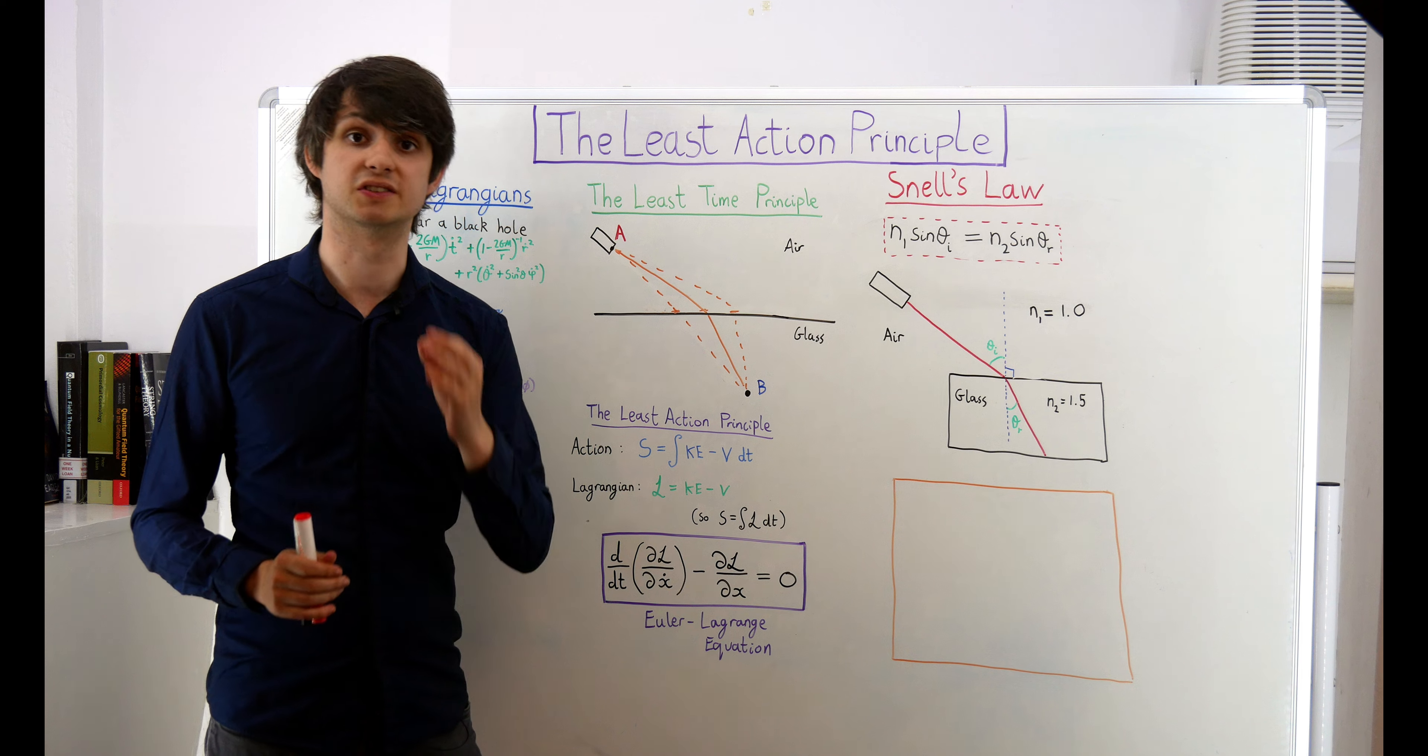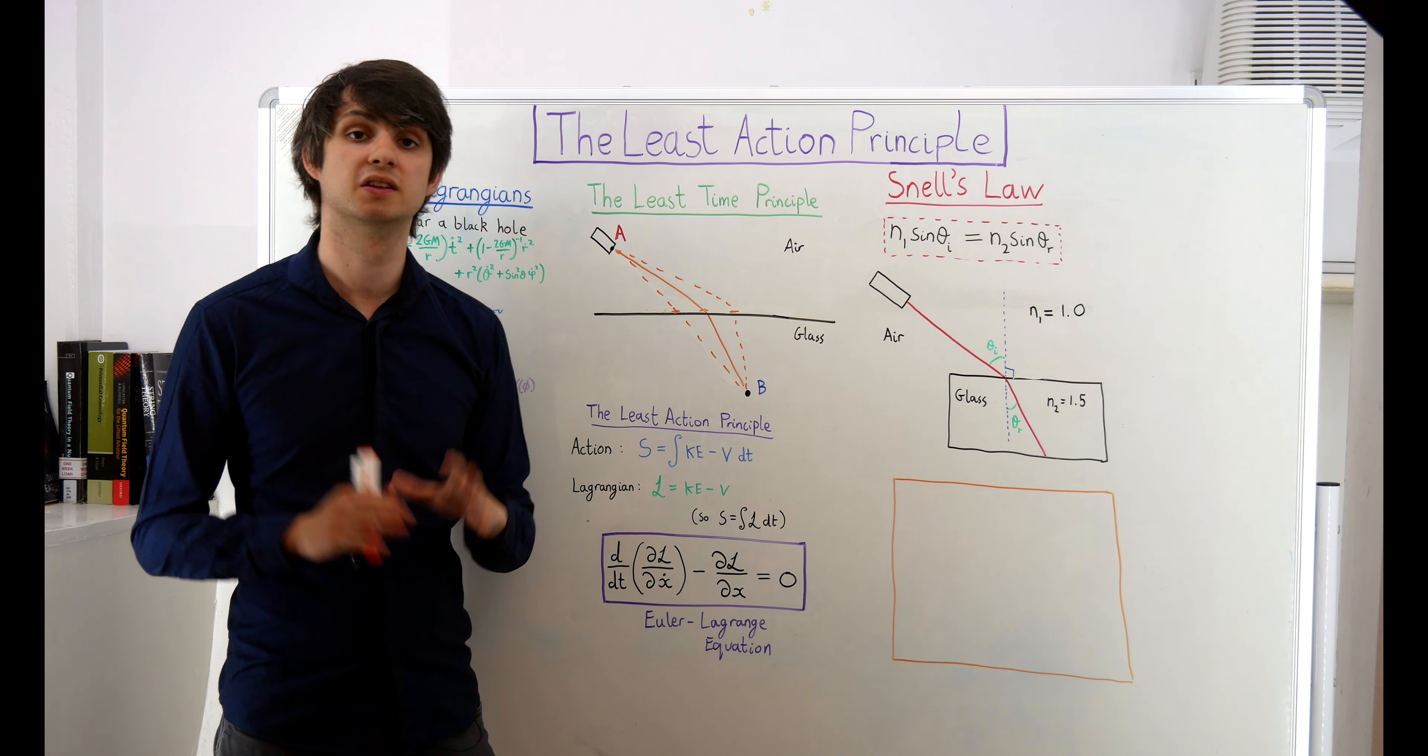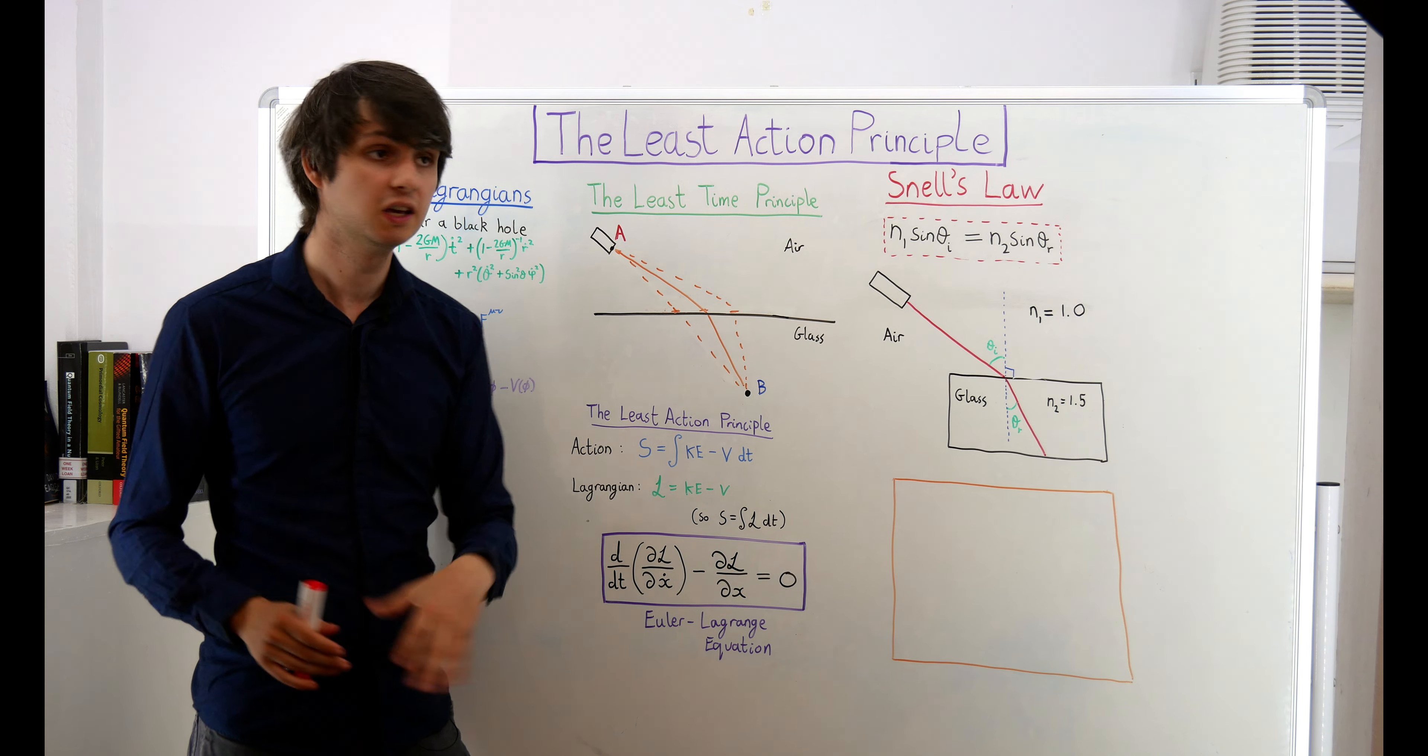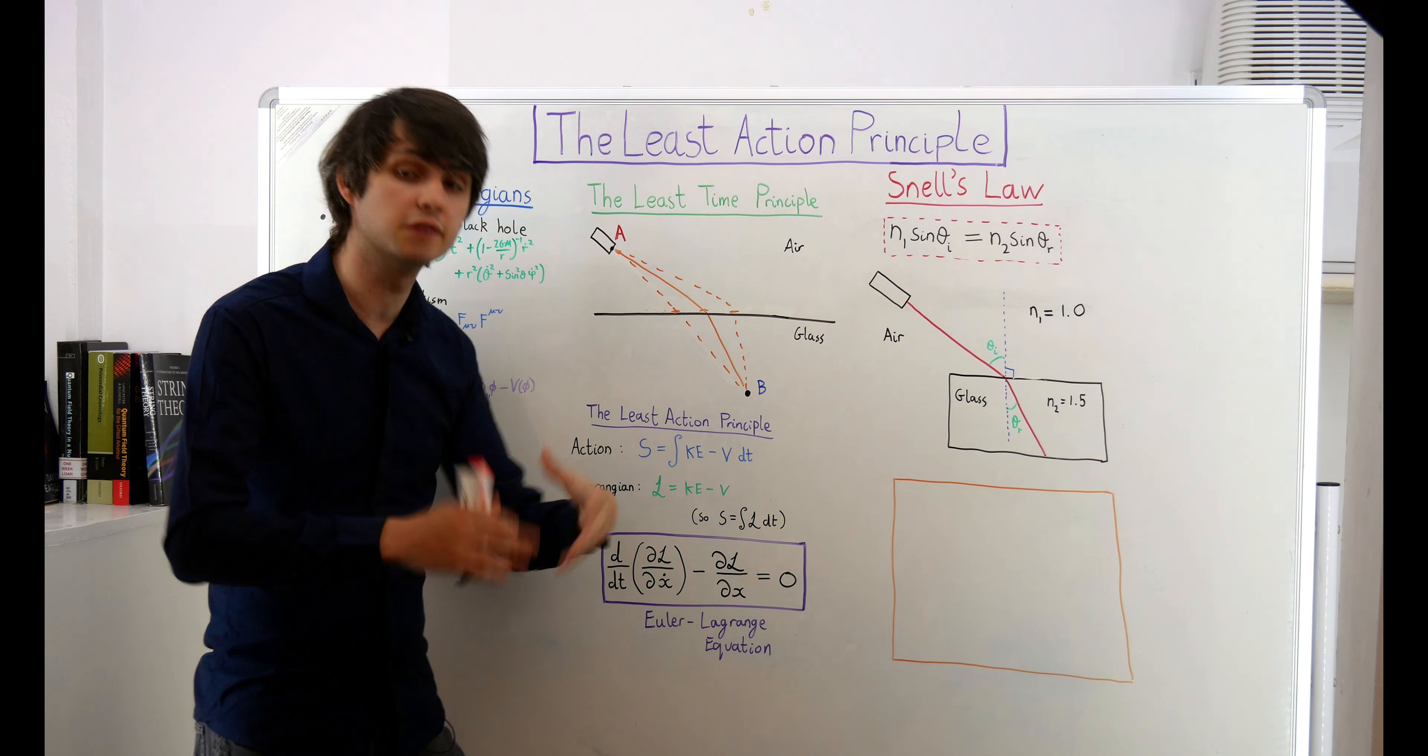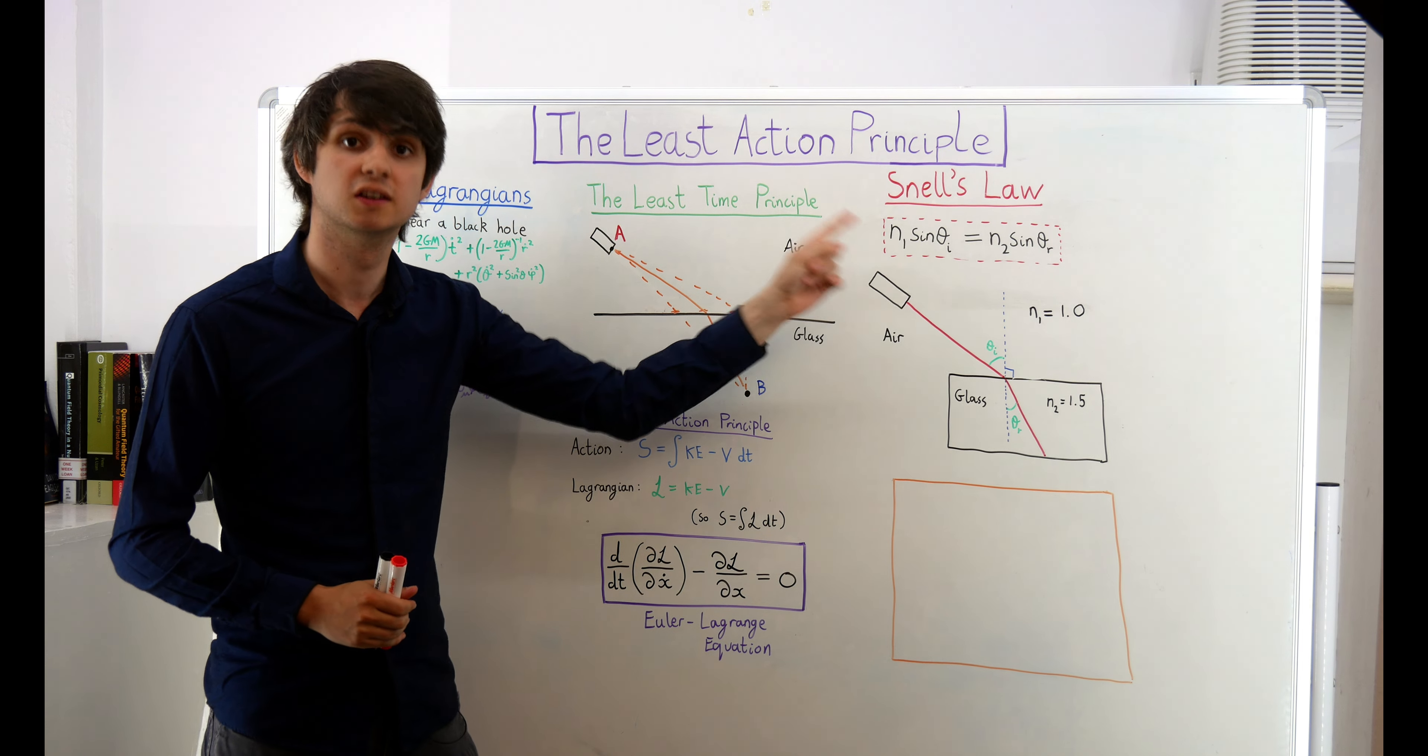What we've learned so far is that light is lazy. It always travels along the path that takes the least amount of time. More profoundly, if we assume Fermat's least time principle, then we can derive a lot about the way that light behaves, including, as we've seen Snell's law.